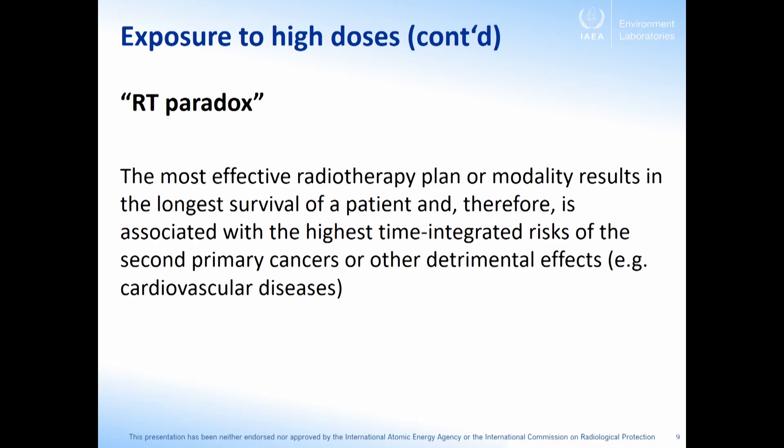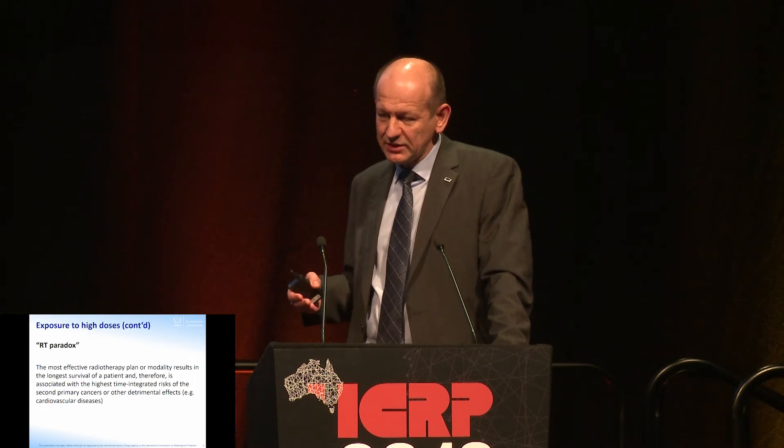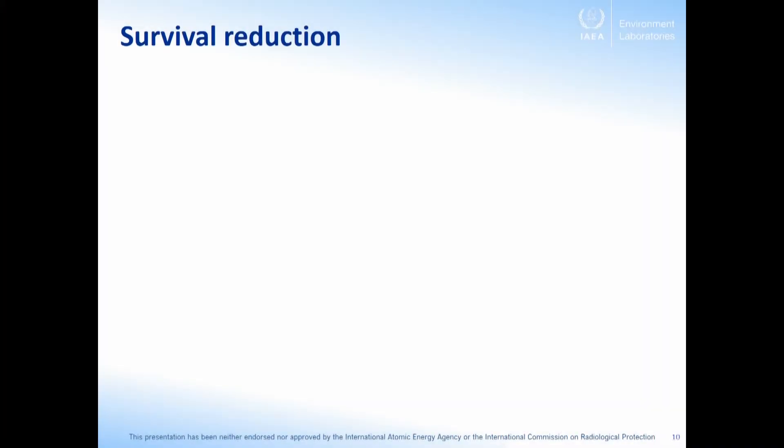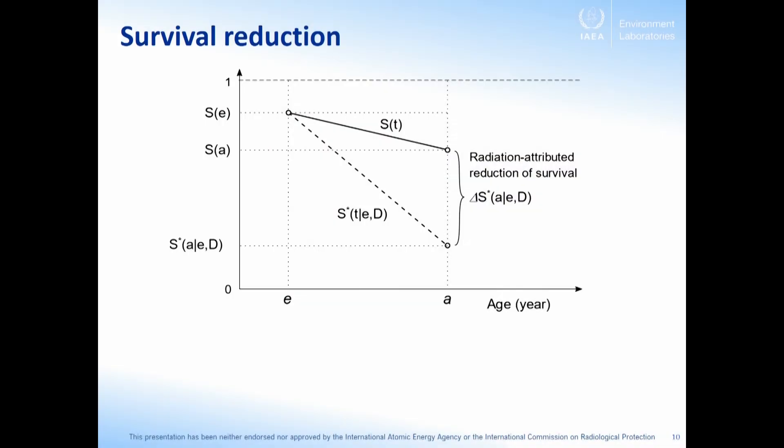Another example illustrating the difficulty with conventional risk metrics is the so-called radiotherapy paradox: if you try to assess the late risk of radiotherapy, the best radiotherapy — which maximizes survival chances — will result in the highest radiation-attributed risks of late effects, making the metric not very useful in clinical practice. An alternative approach is to consider that radiation exposure creates additional hazard resulting in a reduction of survival chances. If a fraction of the population survives to the age of exposure E, radiation reduces that surviving fraction.